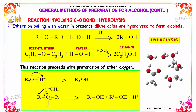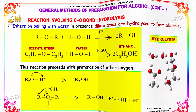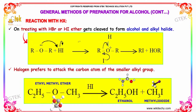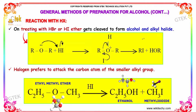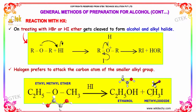This reaction proceeds with the protonation of ether oxygen. That is, oxygen gets stabilized to react with H+ ion to form R2OH+. This on further reaction produces alcohol plus H+ ion. Reaction with hydrogen halide: on treating with HBr or HI, ether gets cleaved to form alcohol or alkyl halide. Halogen prefers to attack the carbon atom of the smaller alkyl group. That is, ethyl methyl ether in the presence of HI forms ethanol plus methyl iodide.